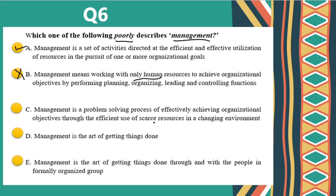C, management is a problem-solving process of effectively achieving organizational objectives through the efficient use of scarce resources, which may include human resources in a changing environment. D, it is the art of getting things done through and with the people in a formal organized group. The correct answer is choice B — management means working with only human resources — this is poorly described.